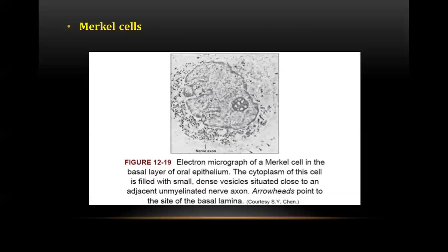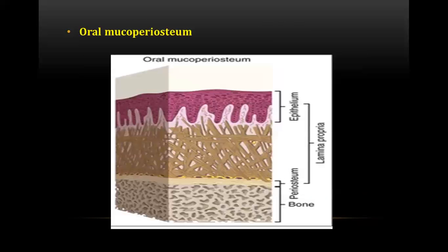The next image-based question was about Merkel cells. The diagram shown is an electron micrograph of a Merkel cell in the basal layer of oral epithelium. The cytoplasm of this cell is filled with small dense vesicles situated close to an adjacent unmyelinated nerve axon.